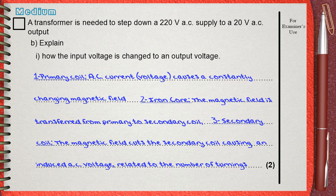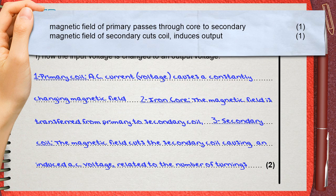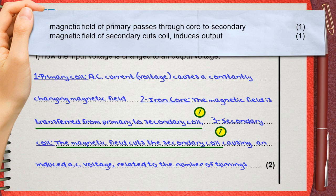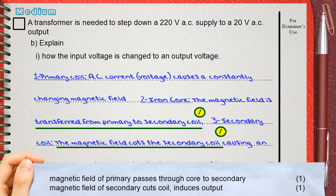The mark scheme gives you two marks for answering this question. The first mark is for mentioning that the magnetic field of the primary passes through the core to the secondary. The second mark is for mentioning that the magnetic field cuts the secondary coil, causing an induced output. Our answer is much longer than the mark scheme, but it is detailed — remember that the mark scheme only gives you the keywords, not the full answer.